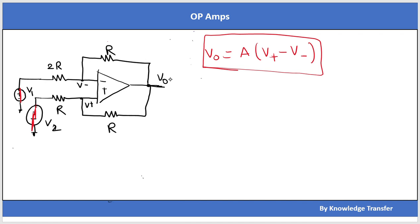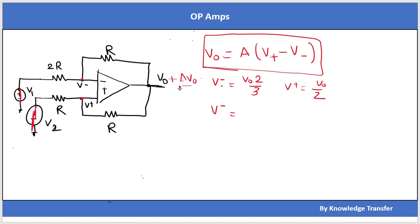Let's assume V0 increased by some delta V0 due to a disturbance. We find V_minus and V_plus voltages. V_minus equals (2/3)·V0, and V_plus equals V0/2. Because of the disturbance delta V0, with respect to only this disturbance: delta V_minus = (2/3)·delta V0 and delta V_plus = delta V0/2.